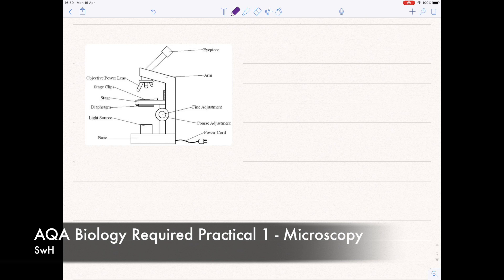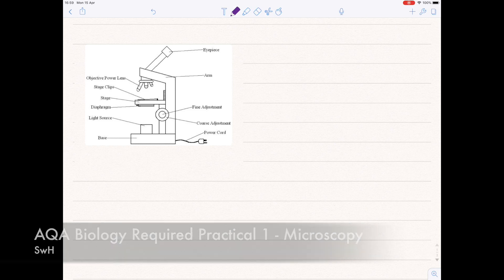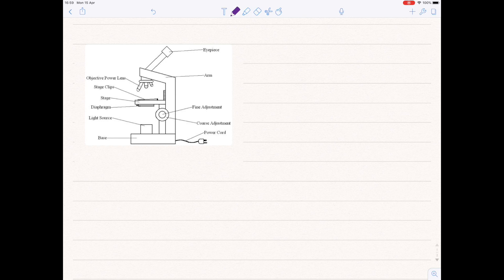In today's video we're going to be looking at the AQA Required Practicals, Practical 1, which concerns microscopy. We need to use a light microscope to observe, draw and label cells in an onion skin.